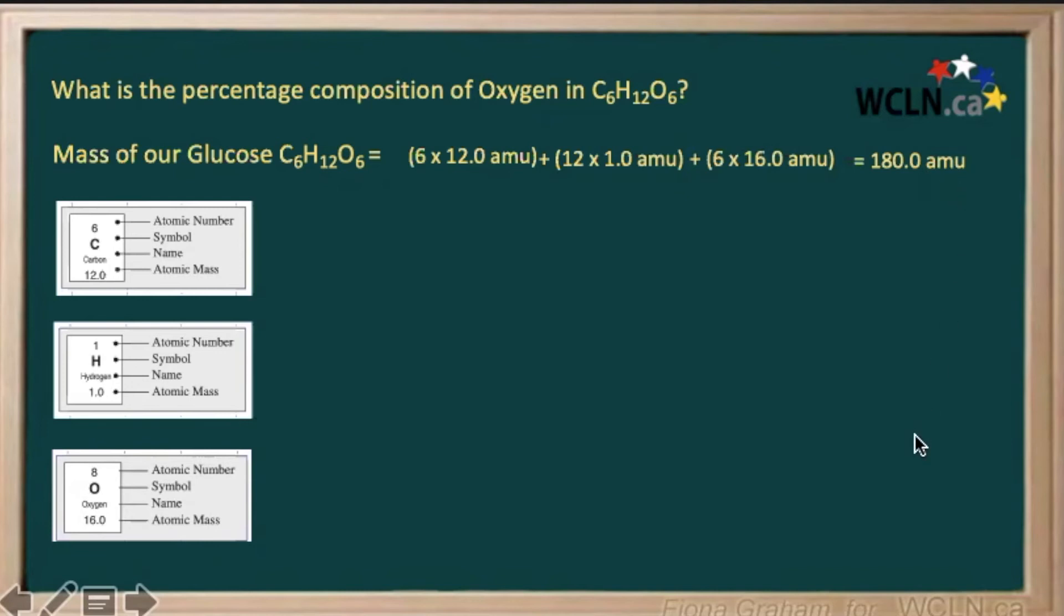So now let's calculate the mass of our oxygen, and the mass of our oxygen, of course, is just 6 times 16 because we have 6 oxygen, and each one weighs 16, giving us a total of 96 atomic mass units.